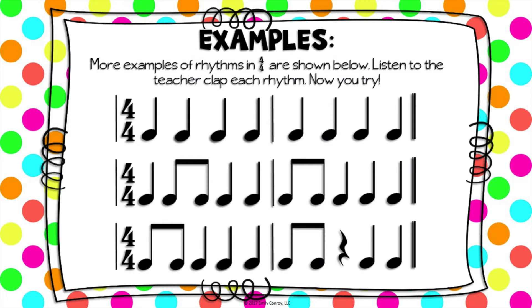We can see in our second example that this one still has four beats in a measure, because a quarter note is worth one beat and two eighth notes paired together are also worth one beat.